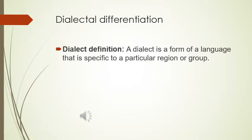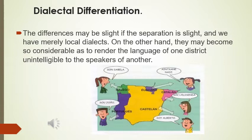The second topic is dialectal differentiation. A dialect is a form of language that is specific to a particular region or group. There are a lot of differences in language depending on the country, the language, and the idiom. As you can see in the picture, you can see the form or the way that people are speaking.